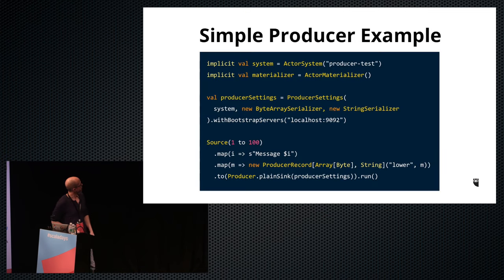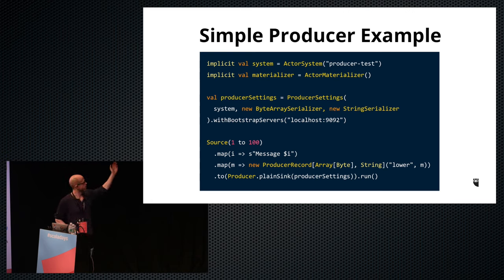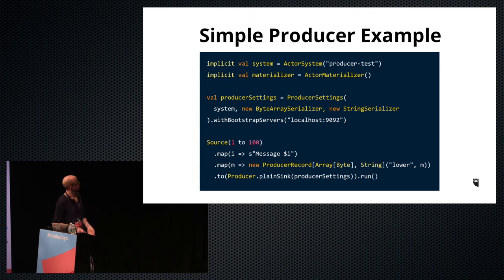Here's what a simple producer example looks like. You need an actor system and an actor materializer — that's what Akka uses to construct actors and do all the magic when it runs your stream. You need producer settings specifying a byte-array key, a string message body, and the Kafka server running on localhost. Finally, we create a Source emitting numbers 1 to 100, map it to strings like 'message 1, message 2', create a ProducerRecord — a Kafka data structure — specifying the topic called 'lower' and sending the message without a key, then send it to a plain producer Sink. When you run it, it will take those messages from 1 to 100, send them to Kafka, and then close the connection.